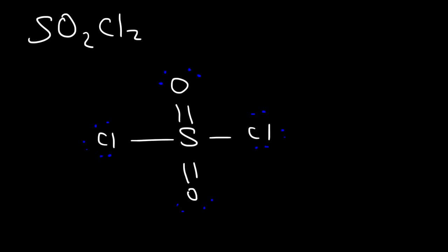How many sigma bonds and pi bonds do you see in this molecule? Every bond has at least one sigma bond: one, two, three, four. There's four sigma bonds. Each double bond contains one pi bond, so we have a total of two pi bonds. It's basically counting. That's all we need to do in order to determine the number of sigma and pi bonds.